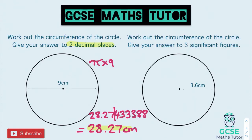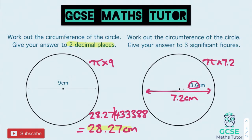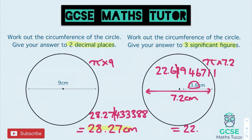The second question hasn't given us the diameter, so we multiply the radius by 2. The diameter is 7.2 centimetres. Putting that into our formula: pi times 7.2. That comes out as 22.6194671. This time we round to three significant figures: 2, 2, 6 — the third significant figure is 6, so we chop there. It doesn't round up, giving 22.6 centimetres.